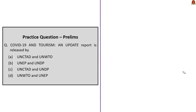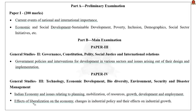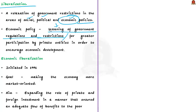This article is an interview with Montek Singh Ahluwalia, an important figure in the liberalization reform process and former Deputy Chairman of the erstwhile Planning Commission. The article is about liberalization, which refers to a relaxation of government restrictions in social, political, and economic policies. In the economic context, liberalization means lessening of government regulations and restrictions, allowing greater participation by private entities, with the objective of encouraging economic development. In India, economic liberalization was initiated in 1991 with the goal of making the economy more market-oriented.